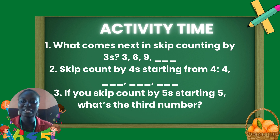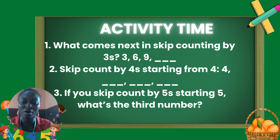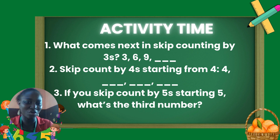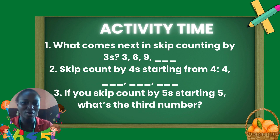Number two: skip count by four, starting from four. So, we have four. Four plus four, eight. Eight plus four, twelve. Twelve plus four is sixteen. So, the numbers in that gap are eight, twelve, and sixteen.